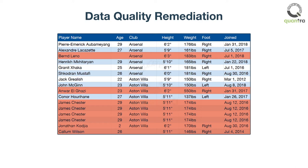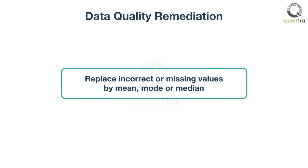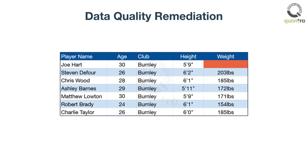A better approach would be to impute the incorrect or missing values. The mean, mode, and median of attributes can be used for this. For example, in this data set, you can impute the missing weight of Joe Hart by the mode of 185, or mean of 178.3, or median of 178.5. We will discuss these methods in detail in the upcoming reading document.